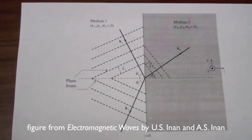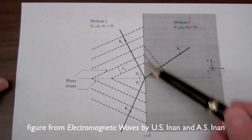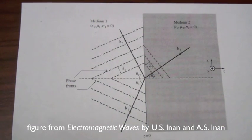In class we saw that the velocity of an electromagnetic wave depended on the dielectric constant. So if we have an electromagnetic wave impinging on a boundary between two dielectrics,